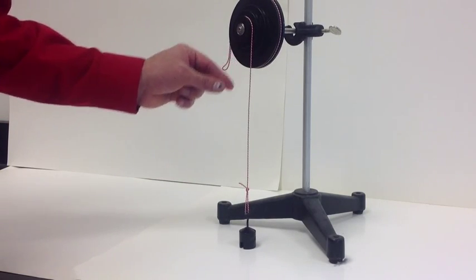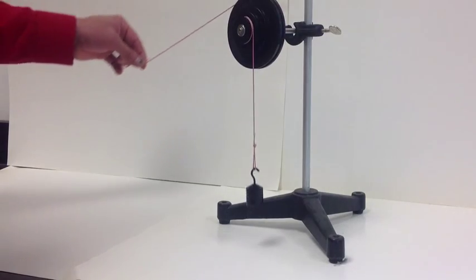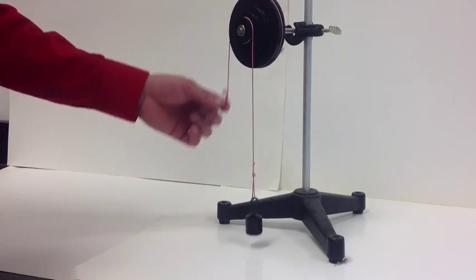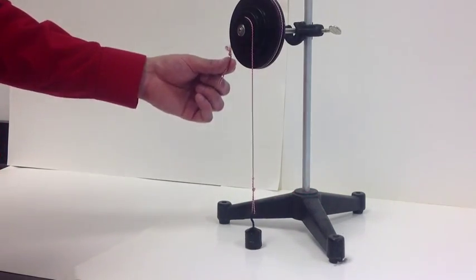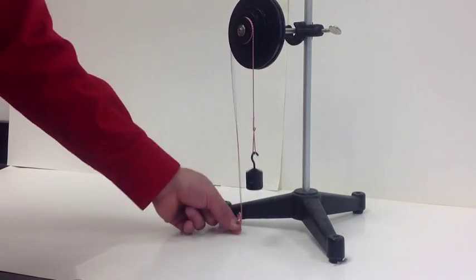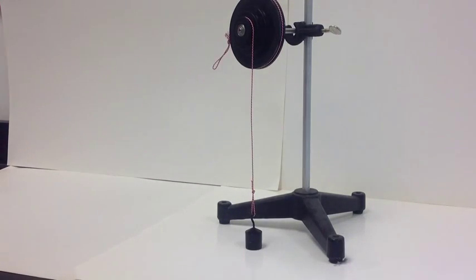Notice that the direction of input force application does not matter. This wheel and axle is like a steering wheel, like a bolt, like the crank set on a bicycle, and like a pencil sharpener. Mechanical advantage greater than one, force multiplier, speed distance divider.